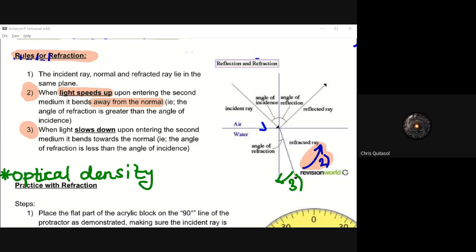And then finally, rule three. When light slows down upon entering the second medium, it bends, as you guessed it, towards the normal. Towards the normal. So I'll read that one again. When light slows down upon entering the second medium, it bends towards the normal. So for example, the angle of refraction will be less than the angle of incidence. So here we have number three. It's going to be bending towards the normal as that light slows down.